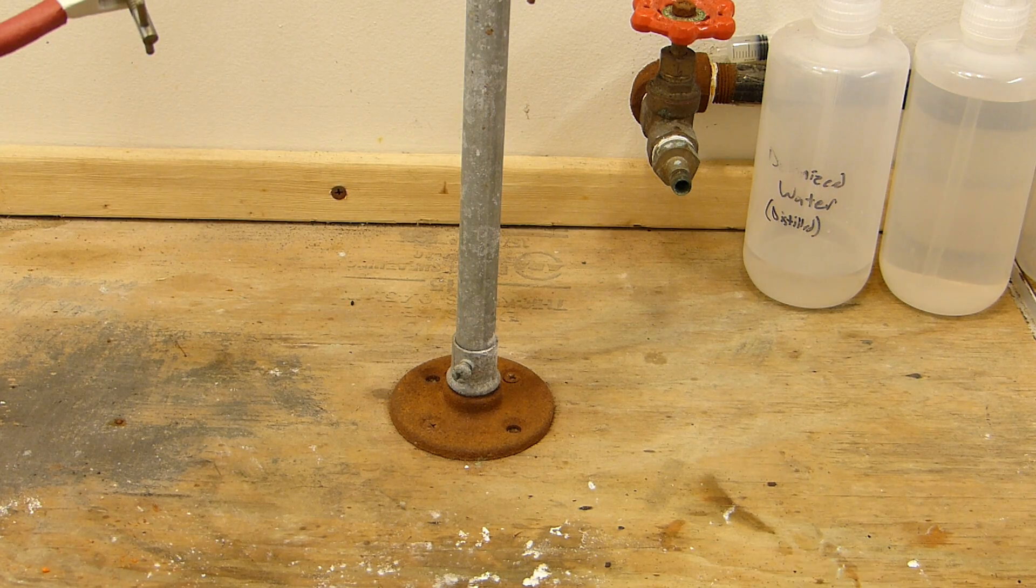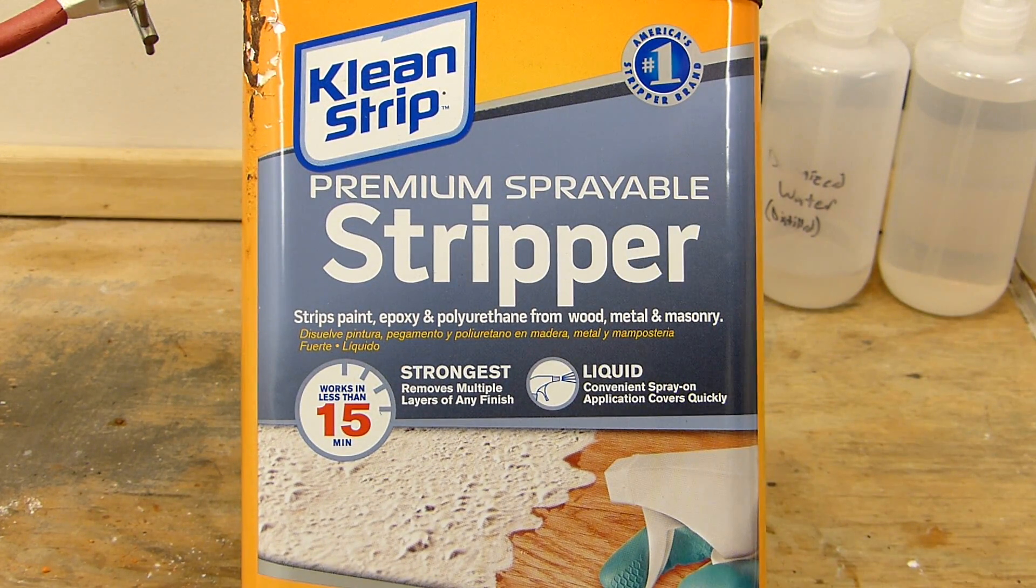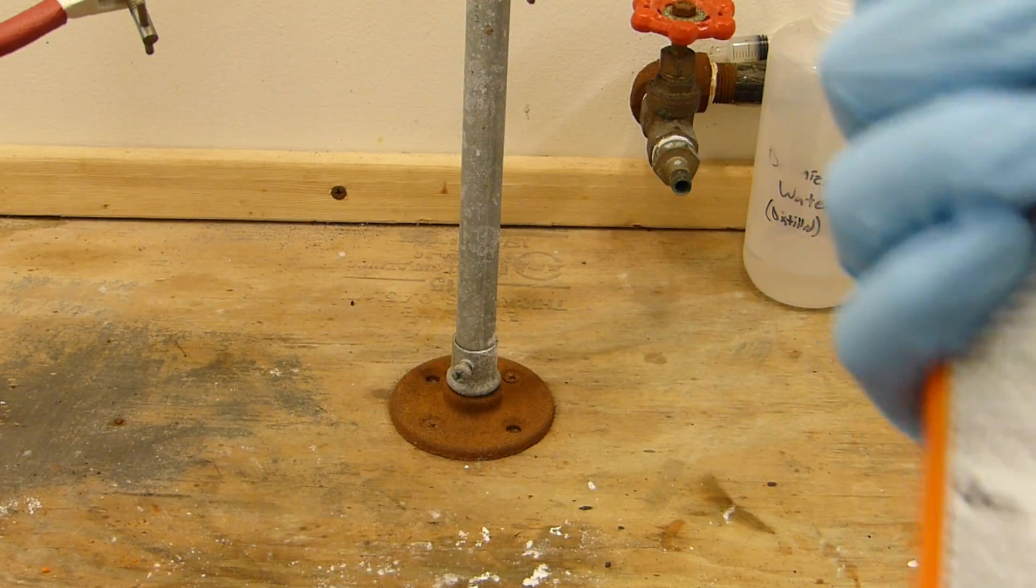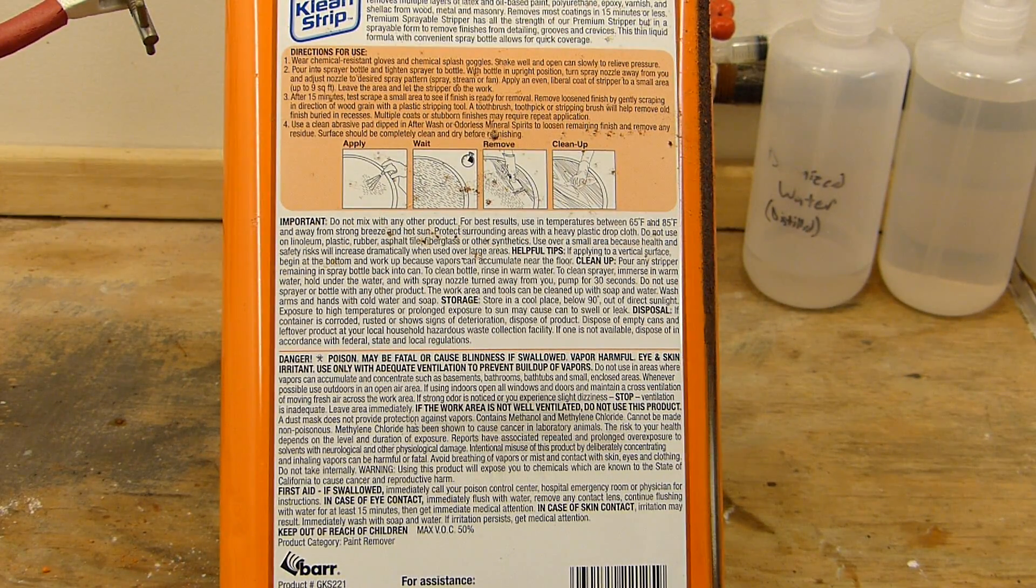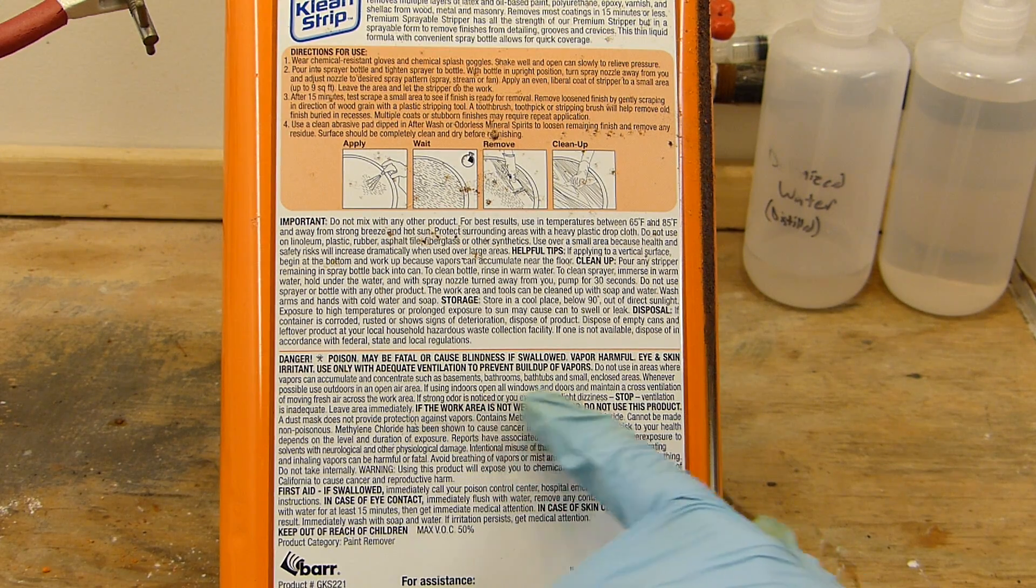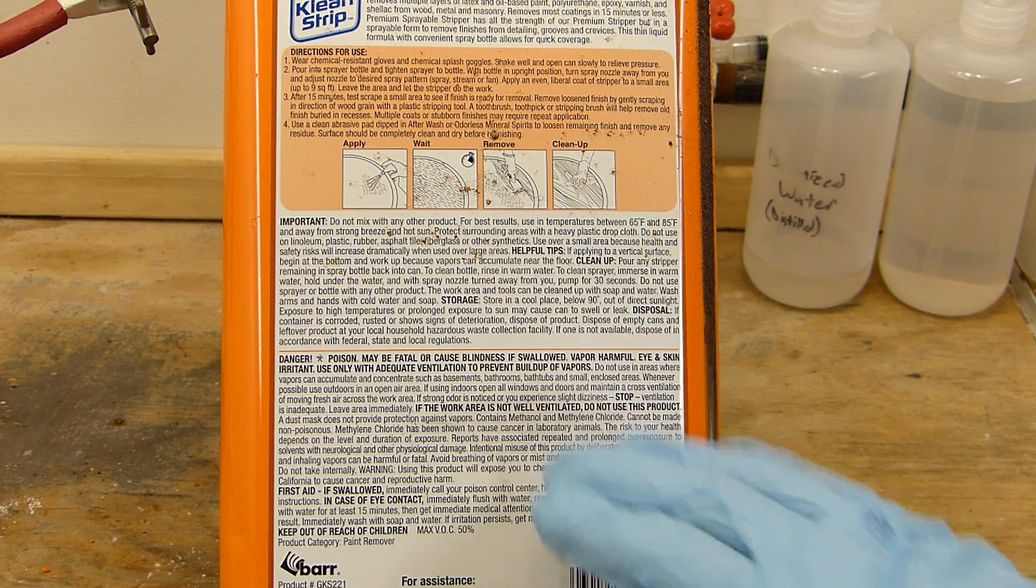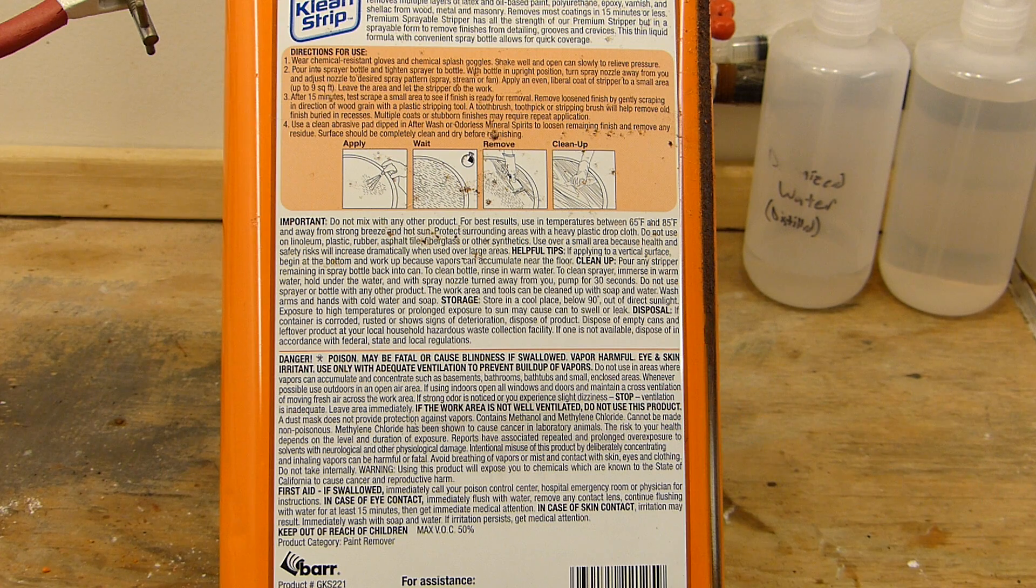The product you can find dichloromethane in is paint stripper. Usually paint strippers will either have dichloromethane or toluene so you need to look at the back to make sure, but this brand here, this Clean Strip Premium Sprayable Stripper, happens to have dichloromethane in it. On the back you can see it says contains methanol and methylene chloride. Methylene chloride is the trade name for dichloromethane. If you bring up the MSDS you'll find that it's 60 to 100 percent by weight dichloromethane and 10 to 20 percent by weight methanol.